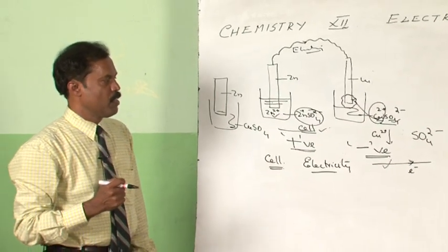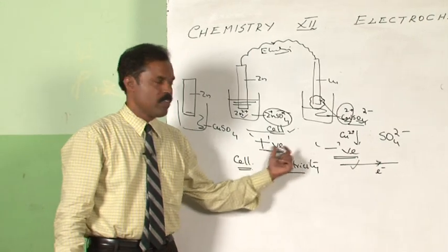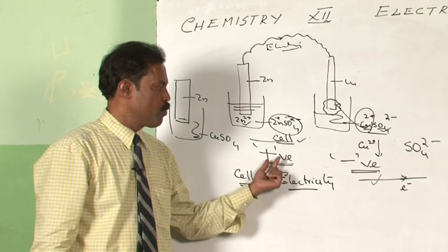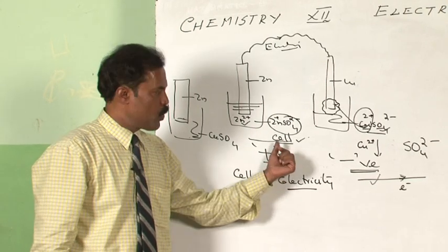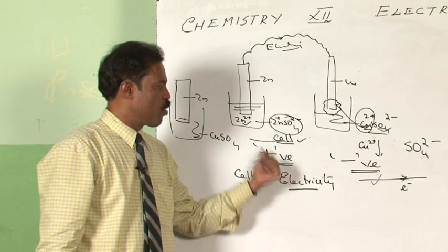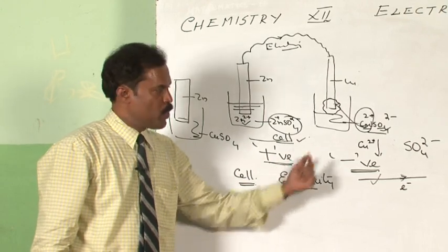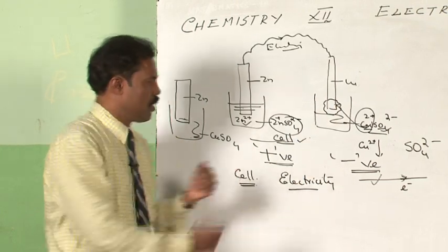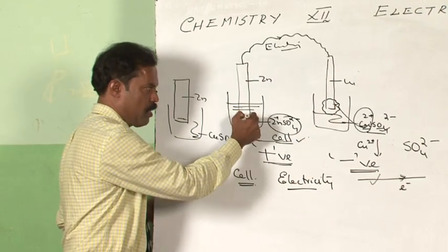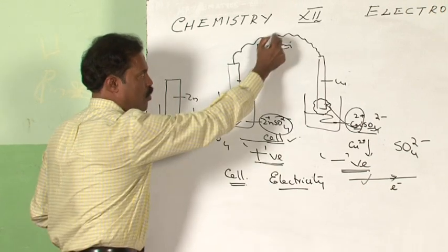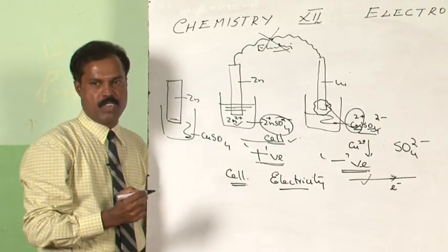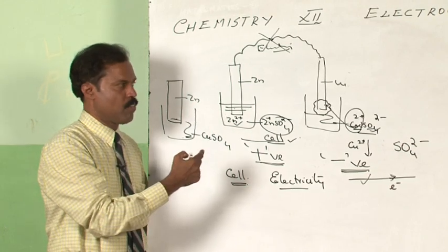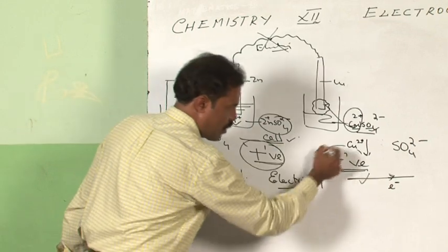The question is: will the cell work under such a circumstance? The left compartment has become positively charged — why should electrons leave this compartment that is already positively charged? And why should electrons be welcomed or attracted to the right compartment, which is negatively charged? Here electrons will be attracted, but there they will be repelled. So the flow of electrons stops. The only way to resume the flow of electrons is by cancelling these charges that are created.